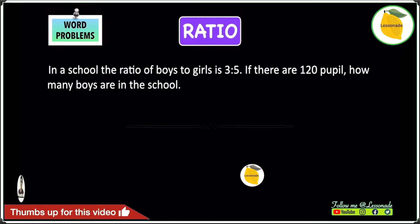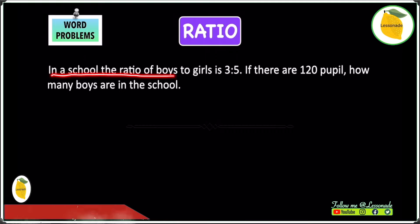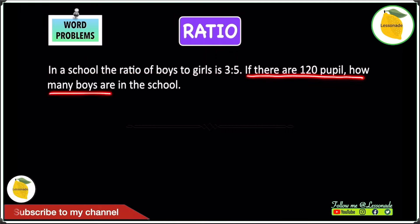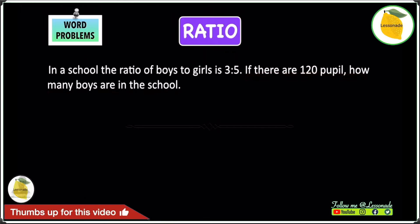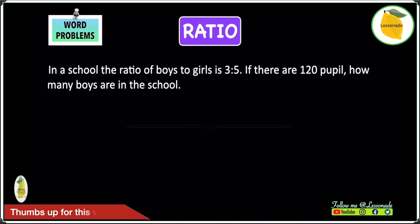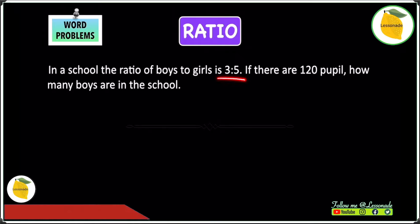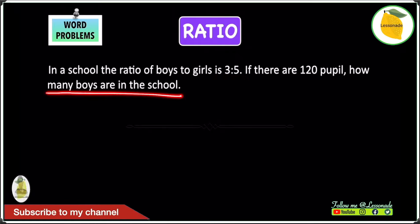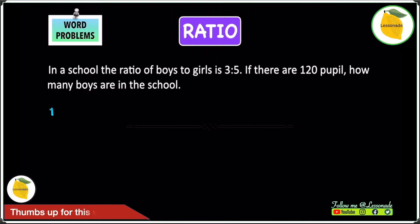Now let's look at another example. In a school, the ratio of boys to girls is 3 to 5. If there are 120 people, how many boys are in the school? This is a bit different to the previous question — before we had to find the ratio, but here we already have the ratio and need to find the number of boys. Let's write down boys and girls because we need to find both.